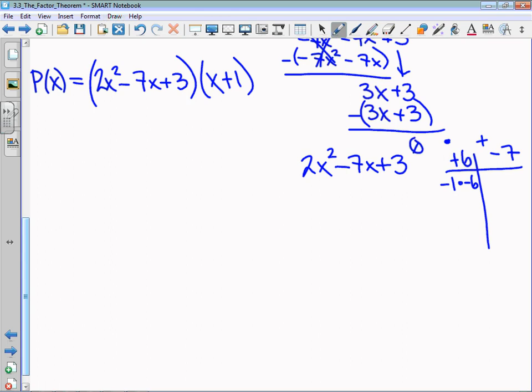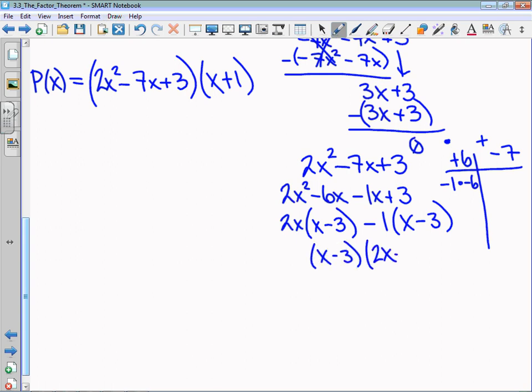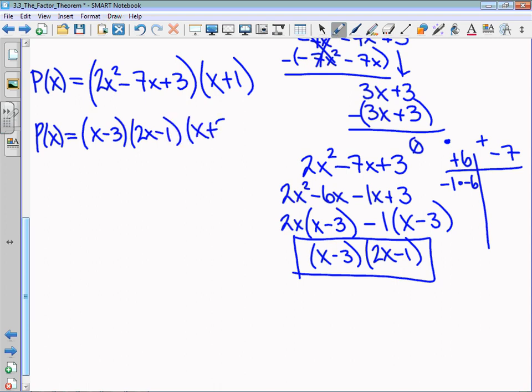I'll use decomposition here, so I'm going to write this as 2x² - 6x - 1x + 3. I can take a 2x out of the first pair, which leaves me with x - 3. I can take a -1 out of the back pair, which leaves me with -1 times x - 3. And then fully factored, we'd have (x - 3)(2x - 1). This expression replaces the quadratic, so therefore P(x) equals (x - 3)(2x - 1) times (x + 1).